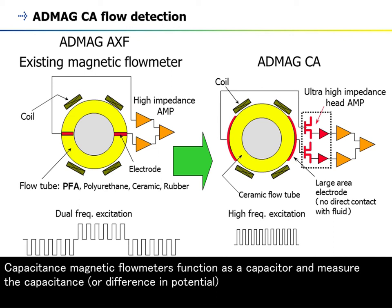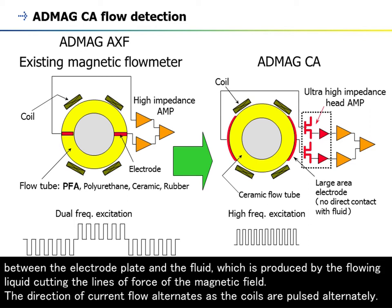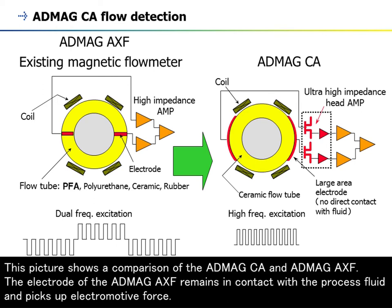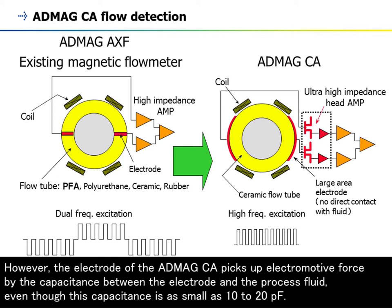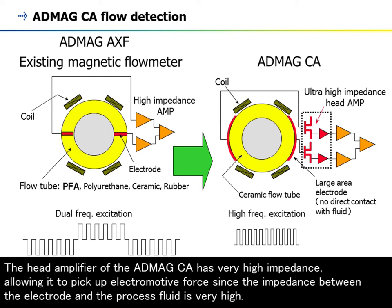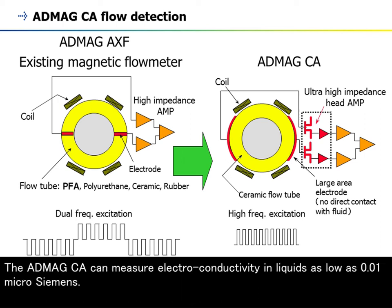Capacitance magnetic flow meters function as a capacitor and measure the capacitance, or difference in potential, between the electrode plate and the fluid, which is produced by the flowing liquid cutting the lines of force of the magnetic field. The direction of current flow alternates as the coils are pulsed alternately. This picture shows a comparison of the Abmec CA and Abmec AXF. The electrode of the Abmec AXF remains in contact with the process fluid and picks up electromotive force. The electrode of the Abmec CA does not come in contact with process fluid; however, it picks up electromotive force by the capacitance between the electrode and the process fluid, even though this capacitance is as small as 10 to 20 pF. The hand amplifier of the Abmec CA has very high impedance, allowing it to pick up electromotive force since the impedance between the electrode and the process fluid is very high. The Abmec CA can measure electroconductivity in liquids as low as 0.01 microsiemens.